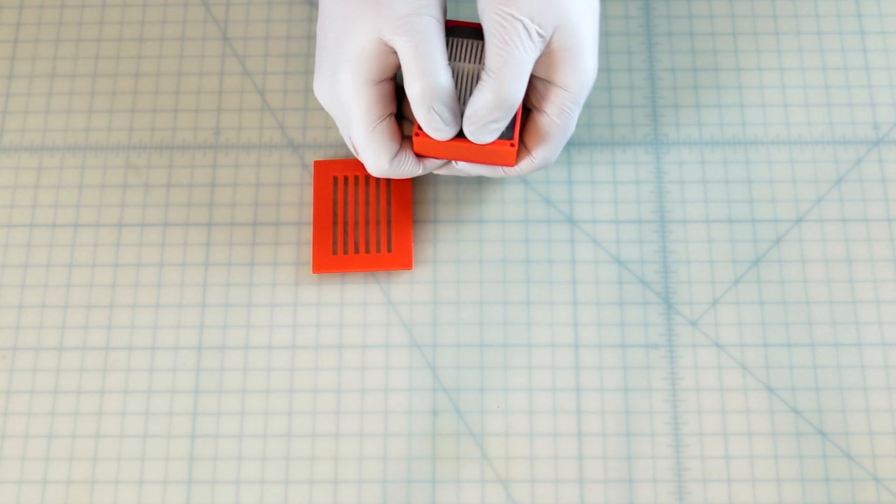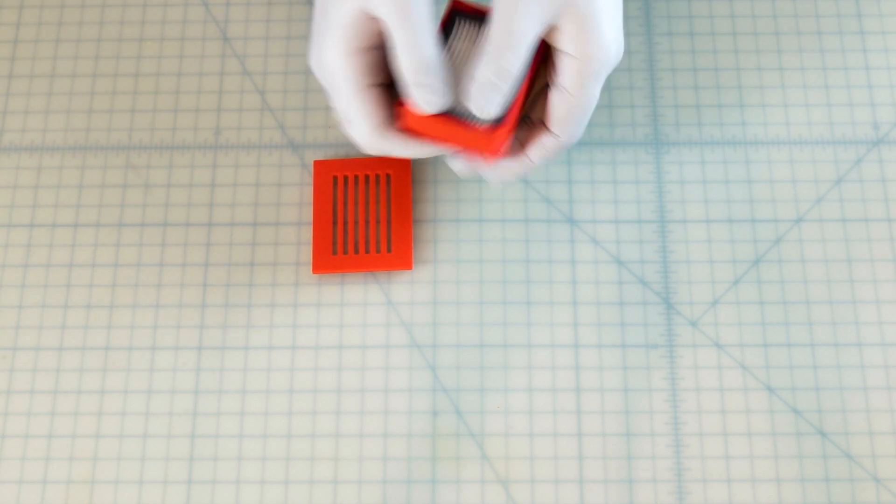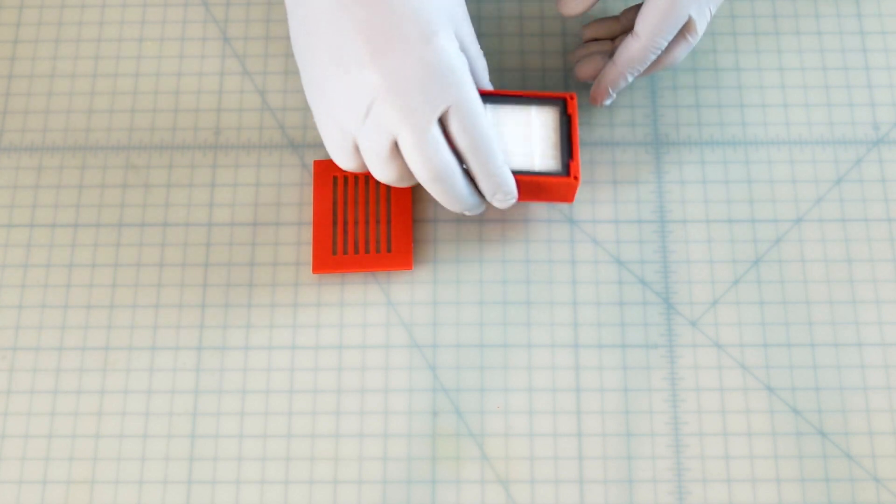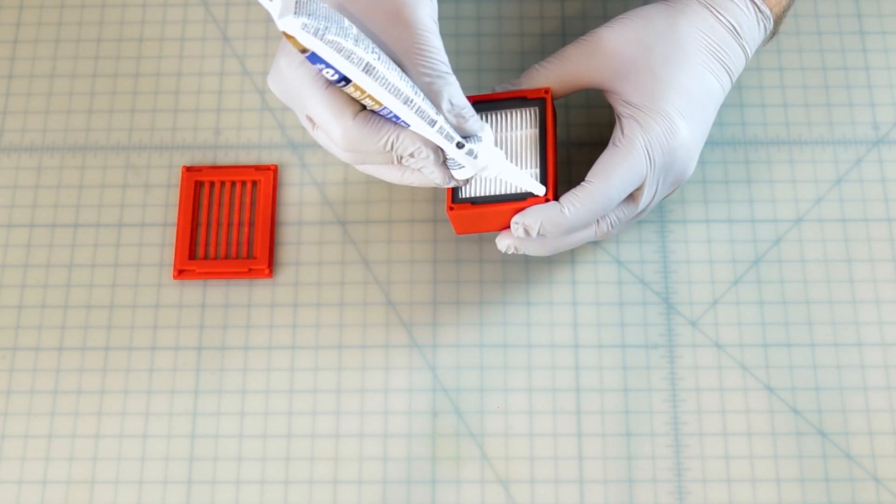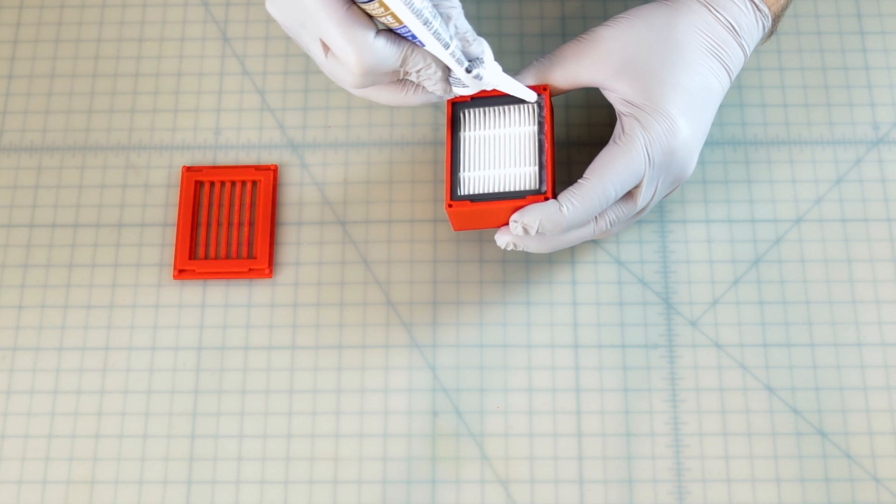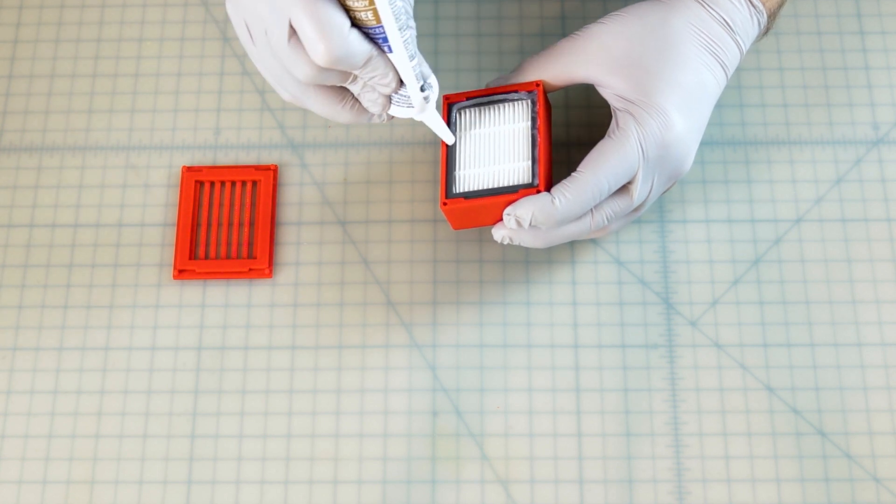Because additive 3D printed parts are not as smooth as injection molded parts, we will be adding a layer of silicon sealant to supplement the seal produced by the lower gasket and ensure a strong seal.